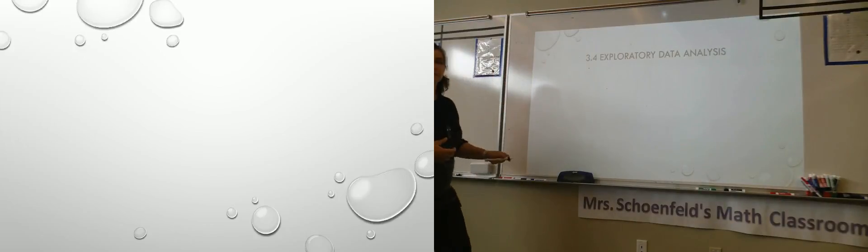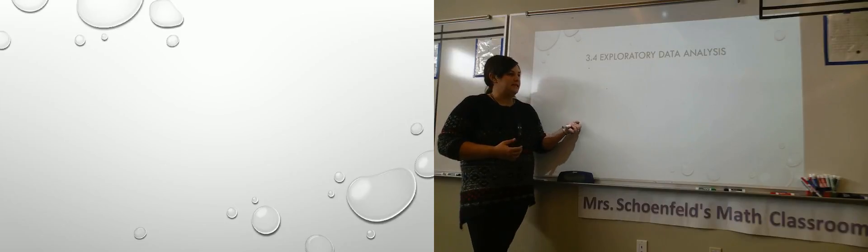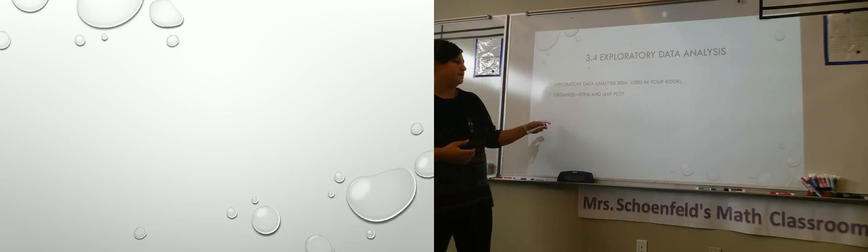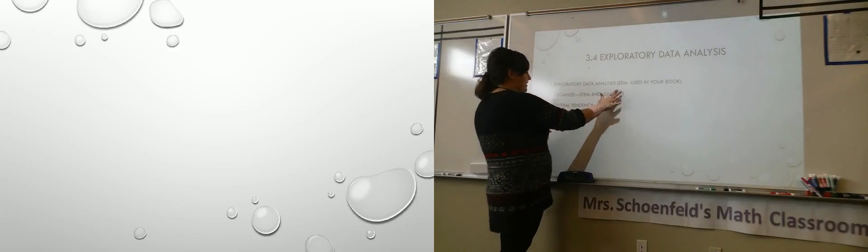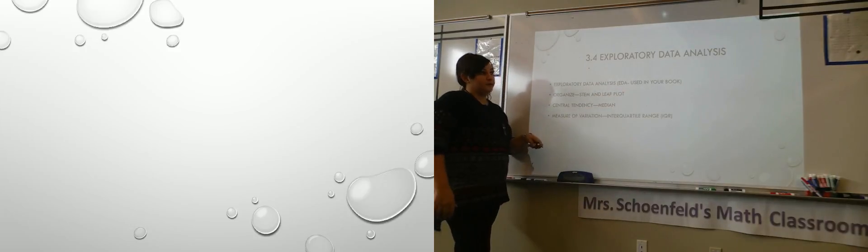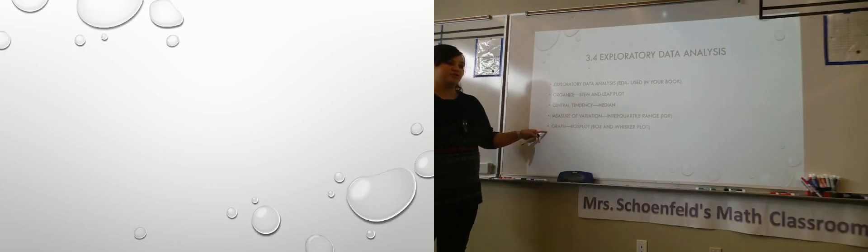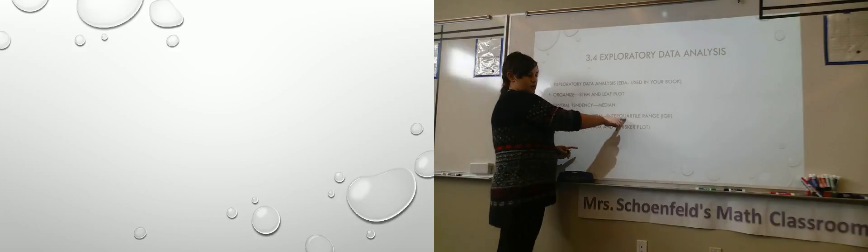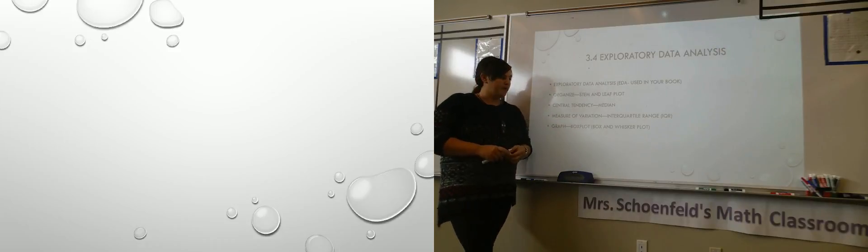Today we're doing exploratory data analysis. Your book just calls it EDA a lot. The way we use it is we organize with stem and leaf plots. When we talk about exploratory data analysis, our central tendency that we're going to use is always the median. The measure of variation is our IQR. And our graph that we're going to use is our box plot, box and whisker plot.